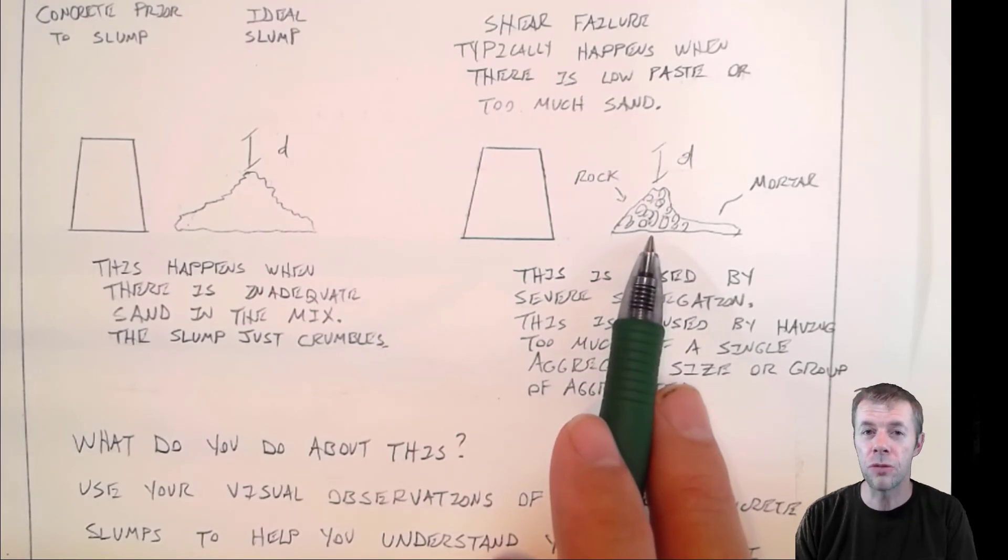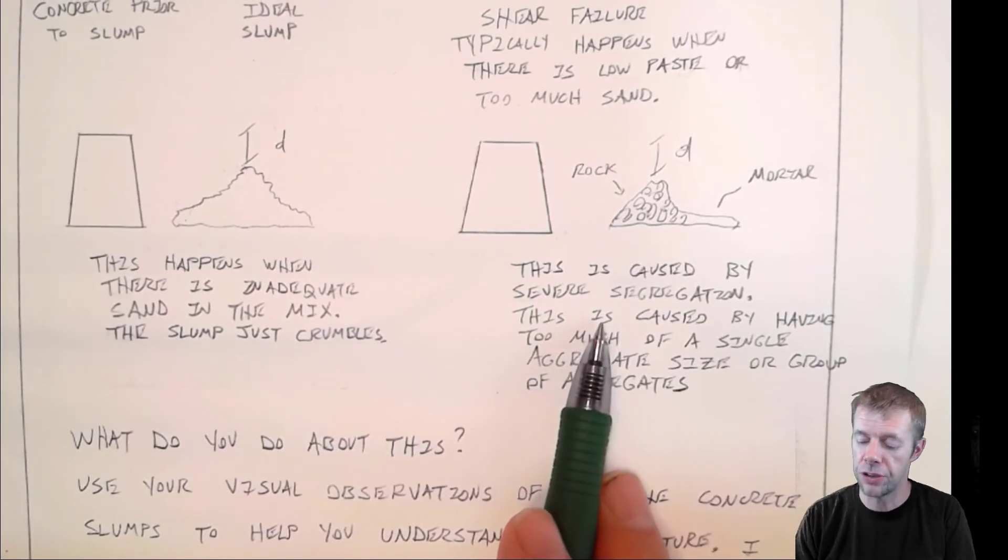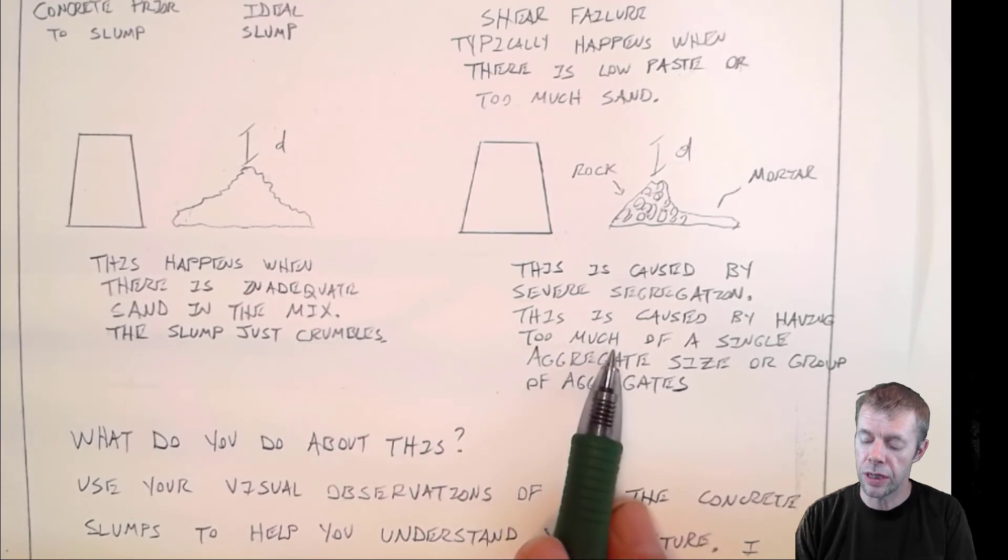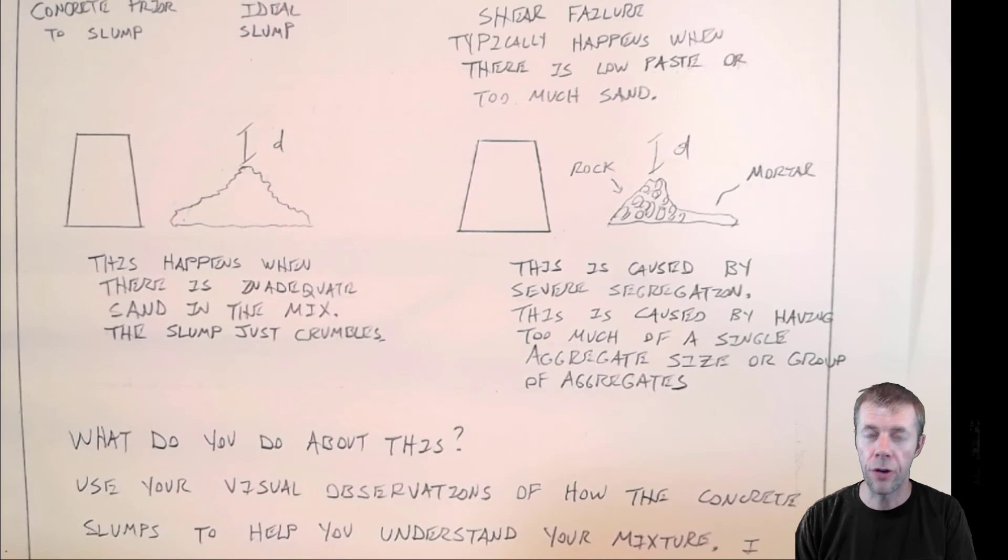But again, if you use your eyes and your brain, you can see this and you can know what's happening. And again, this is caused by severe segregation. This usually happens when you have too much of a single aggregate size or maybe a group of aggregate size. And they just don't flow well. They just don't work well together.